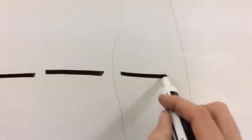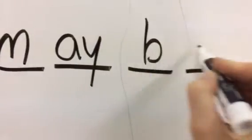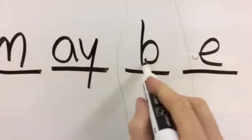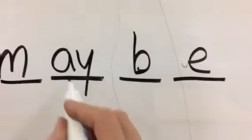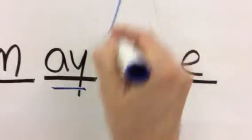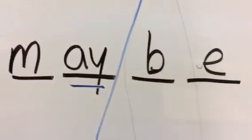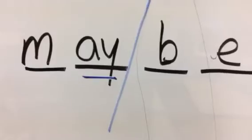Number eight is maybe. M-A-Y-B-E. Maybe. This one's a little trickier, but it still follows a rule. The A sound is A-Y, because I can break this word into two syllables, may-be, may-be. So it's at the end of the first syllable, and therefore we use A-Y.